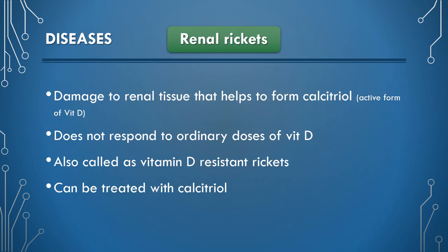Renal rickets is associated with damage to renal tissue that helps form calcitriol, the active form of vitamin D. It does not respond to vitamin D in ordinary doses; therefore, some workers regard this as vitamin D-resistant rickets. Renal rickets can be treated by administration of high doses of calcitriol.